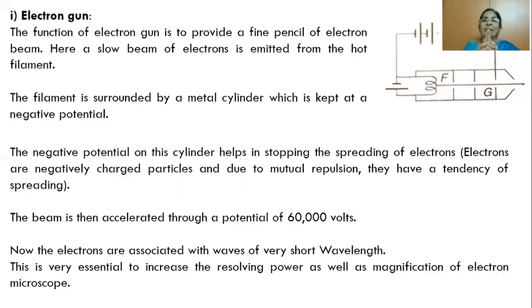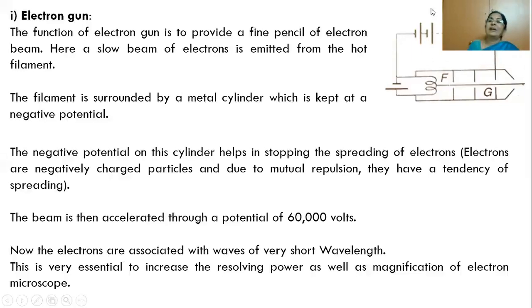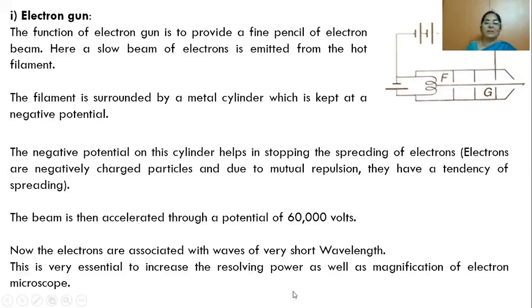How is this possible? We know lambda equals h by mv. The formula is lambda equals h by square root of 2mqV. If V, the potential, is very high, the wavelength lambda becomes very small. By having a high tension battery of 60,000 volts, we generate an electron beam with wavelength 5 into 10 to the power minus 12 meters. This is essential to increase the resolving power as well as the magnification of the image.